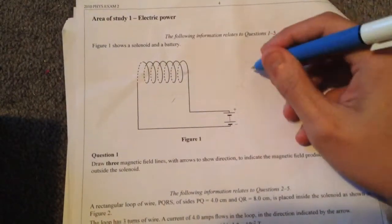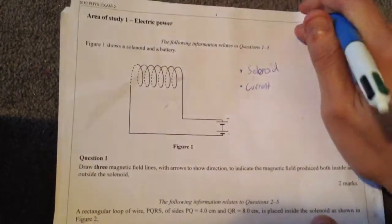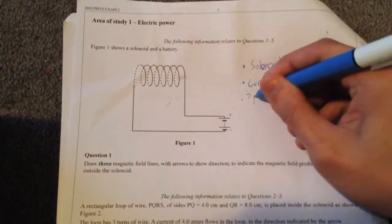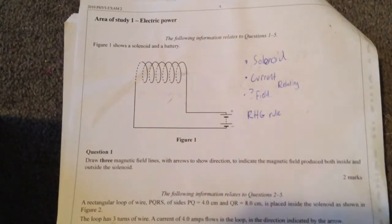So first we read the question and we figure out what's important. It says solenoid and current is important. And what are we trying to find? We're trying to figure out what the field is. So we need the right hand grip rule which essentially relates current to field.